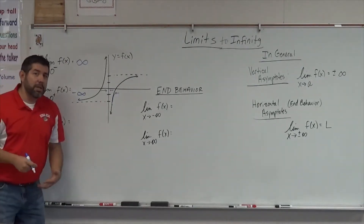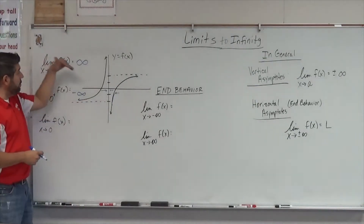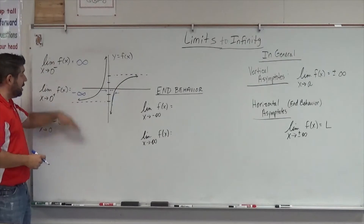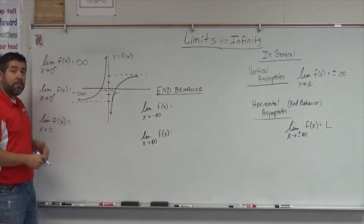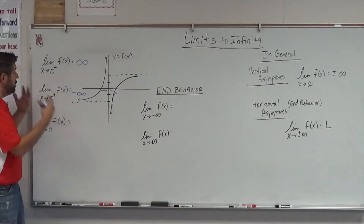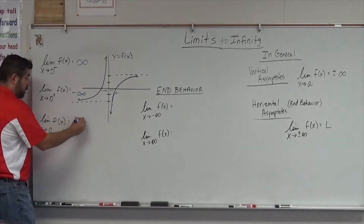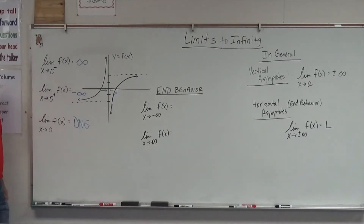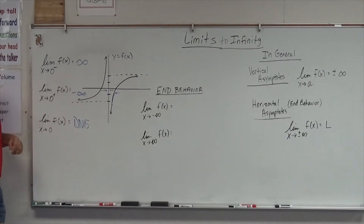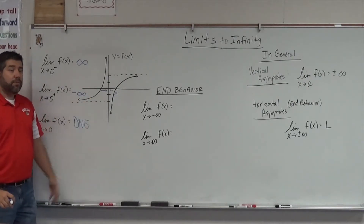From the last video, we know we've got one-sided limits. If the limit from the left does not equal the limit from the right, the limit does not exist. So the limit as x approaches 0 does not exist because the limits are going different ways.